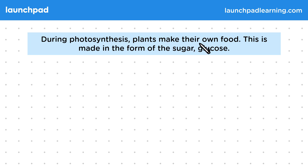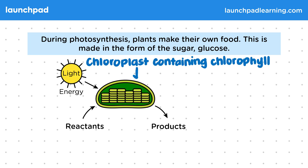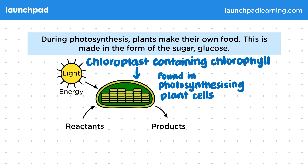During photosynthesis, plants make their own food. This is made in the form of the sugar, glucose. This diagram shows a chloroplast containing chlorophyll found in photosynthesising plant cells. Light energy is captured and then used by the chloroplast, which transfers the energy required for a chemical reaction that produces a sugar.